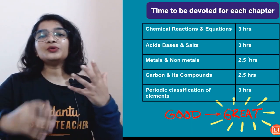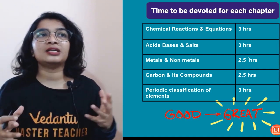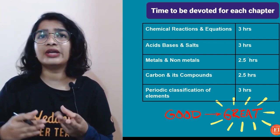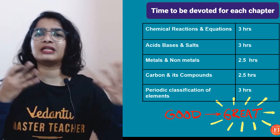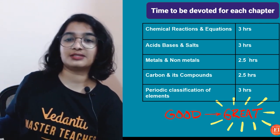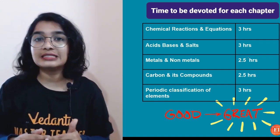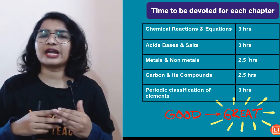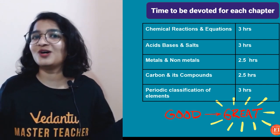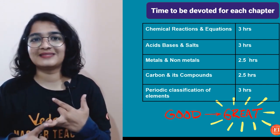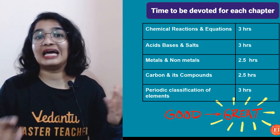For Chemical Reactions and Equations, study for three hours — it's a large chapter covering types of chemical reactions, definitions, examples, identifying reaction types, differences like combination vs. decomposition reactions, and balancing redox equations. For Acids, Bases and Salts, there is a lot to cover: indicators, chemical properties, the chlor-alkali process, and the four salts that can be manufactured using NaCl and their uses.